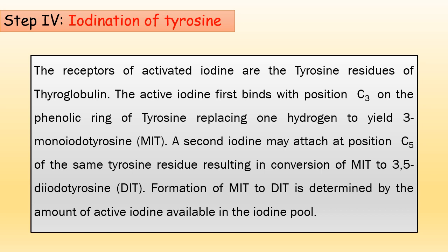The iodine that is oxidized is now in the lumen. Thyroglobulin produced by the endoplasmic reticulum also comes to the lumen. Thyroglobulin contains tyrosine residues, which are the receptors for activated iodine. The active iodine first binds to the carbon-3 position of the phenolic ring of tyrosine, replacing one hydrogen to yield 3-monoiodothyrosine, that is MIT. A second iodine may attach at carbon-5 of the same tyrosine residue, converting MIT to 3,5-diiodothyrosine, that is DIT. The formation of MIT to DIT is determined by the amount of active iodine available in the iodine pool.